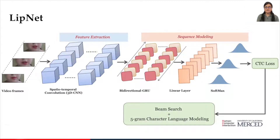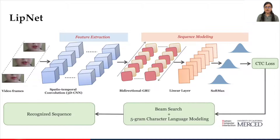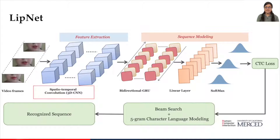On top of that, it uses a beam search and a 5-gram character-level language model for decoding. Although LipNet has proven to be promising, it has several limitations. The use of 3D CNN neglects the hidden information between channel correlation in spatial and temporal directions, which limits the performance of its architecture. Further, a deep 3D CNN increases computational complexity and memory intensiveness.